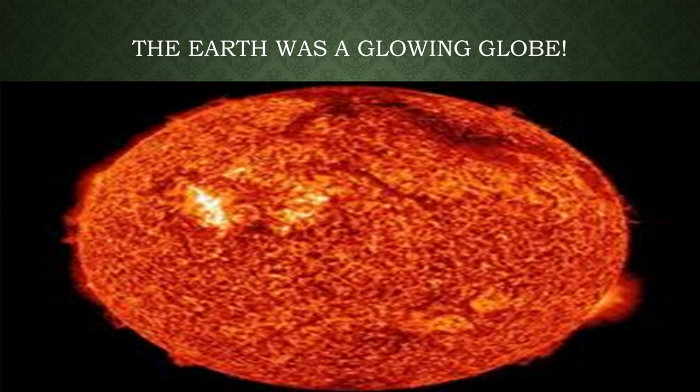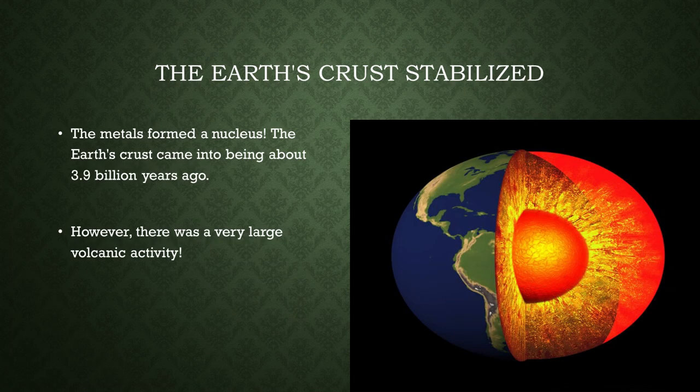When the Earth was first created, it was a glowing globe. The metals then formed a nucleus. The Earth's crust came into being about 3.9 billion years ago. But even though the Earth had a crust, there were still large amounts of volcanic activity during this time.